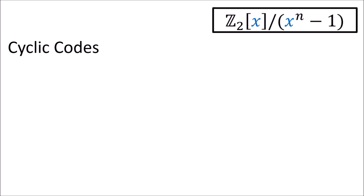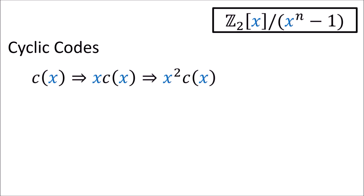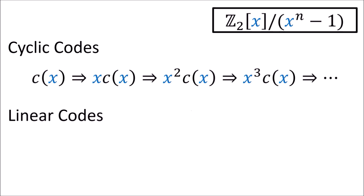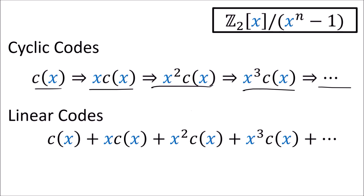With cyclic codes, any circular shift of a valid codeword is another valid codeword. So if c(x) is a valid codeword polynomial, then x·c(x) is also valid, as is x²·c(x), x³·c(x), and so on. Any multiplication by a power of x gives another valid codeword, since multiplication by x is just a circular shift. And since we're dealing with cyclic linear codes, any sum of valid codewords is also valid by linearity.